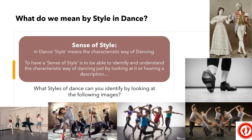Style in dance is going to be a key thing that we look at in this unit. In dance, style means the characteristic way of dancing. To have a sense of style is to be able to identify and understand the characteristic way of dancing just by looking at or hearing a description. I'd like you to pause the video and identify what styles of dance you can see by looking at the following images, and why you think that. For example, is it to do with the way the dancer's feet are, or different arm positions? Please pause the video and try that activity now.